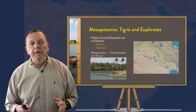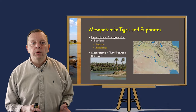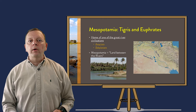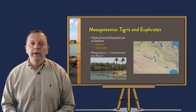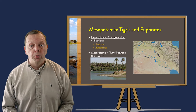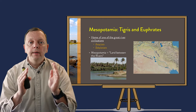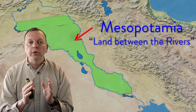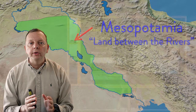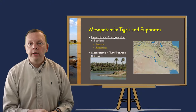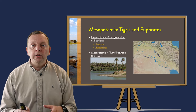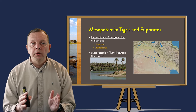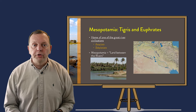In the Middle East, the Euphrates and Tigris rivers begin in Turkey and flow south through Syria and Iraq before entering the Persian Gulf. It is between these rivers that we find the home of the ancient Mesopotamian civilization of the Assyrians and Babylonians. The name Mesopotamia actually means 'land between the rivers' in ancient Greek.